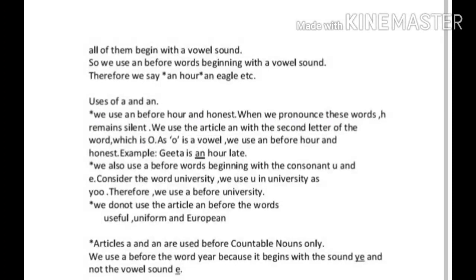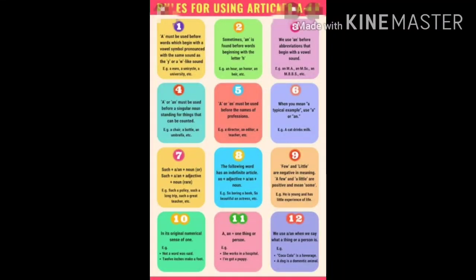Articles A and AN are used before countable nouns only. We use A before the word 'year' because it begins with the sound Y and not the vowel sound E. Now let's come to the rules for using articles A or AN. First rule: A must be used before words which begin with a vowel symbol pronounced with the same sound as the Y or W-like sound. Examples: a Euro, a unicycle, a university.